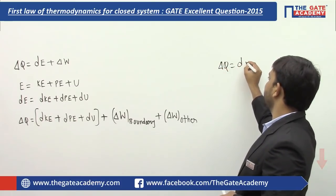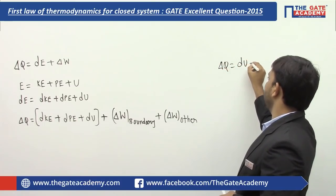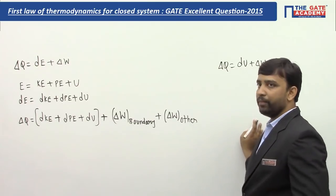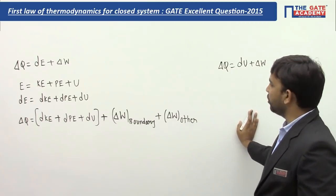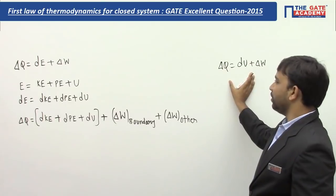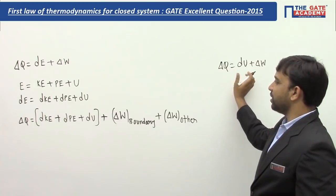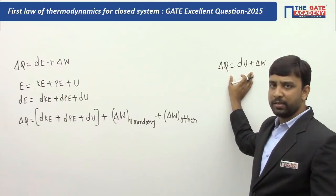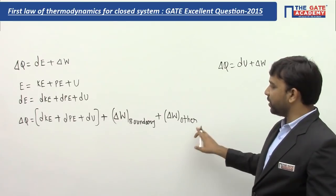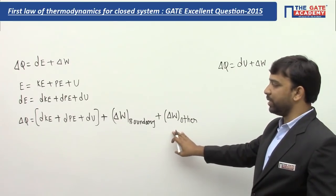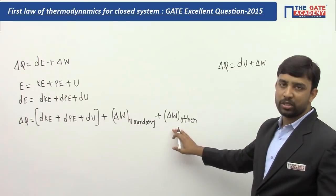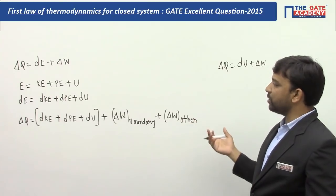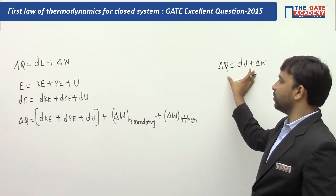Then the equation reduces to: dQ = dU + delta W. Most students tend to write the first law in this reduced form, but make a habit of writing the most generalized equation first. If you then apply constraints, you will arrive at this reduced form.